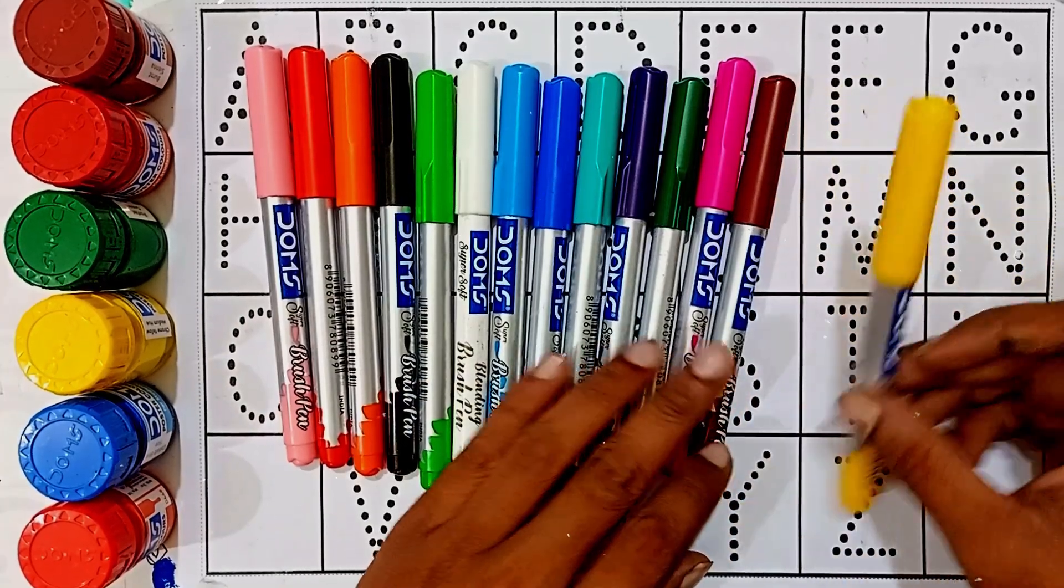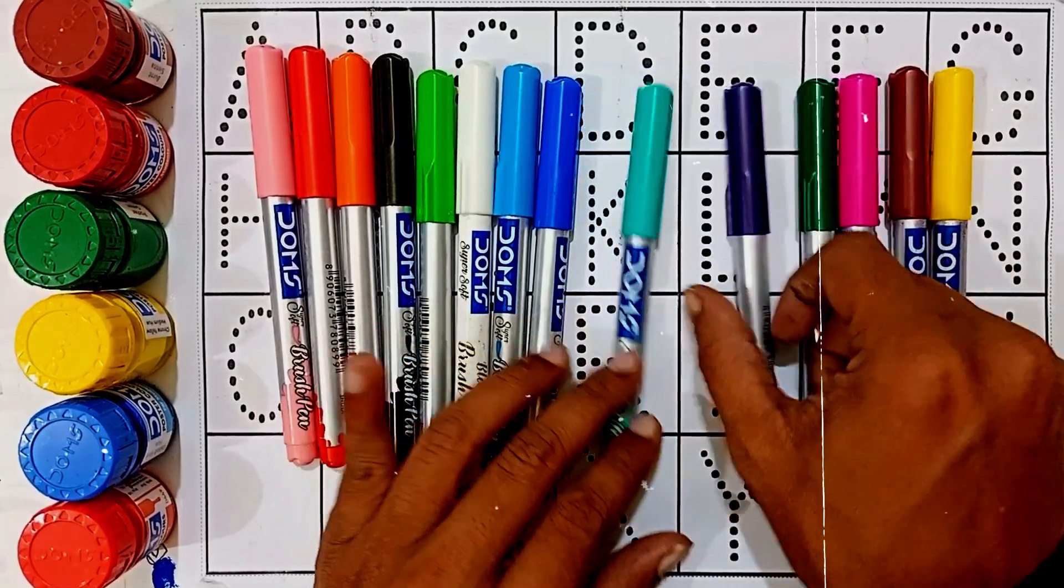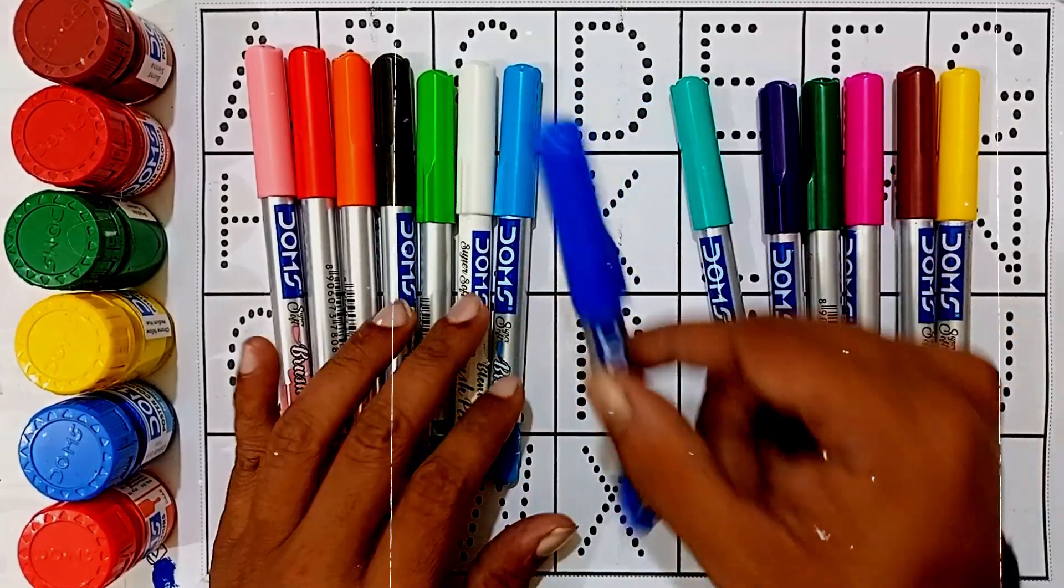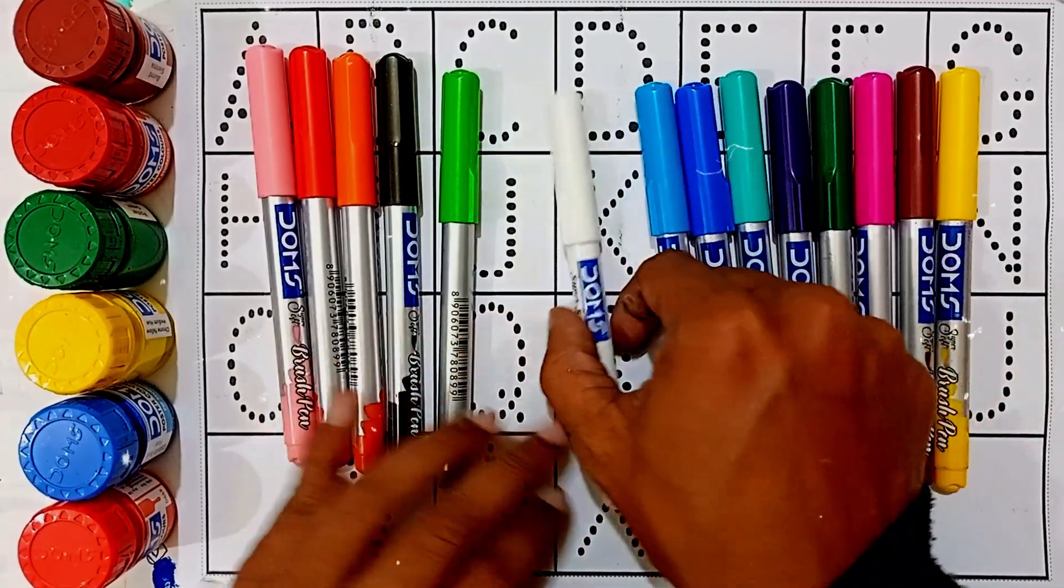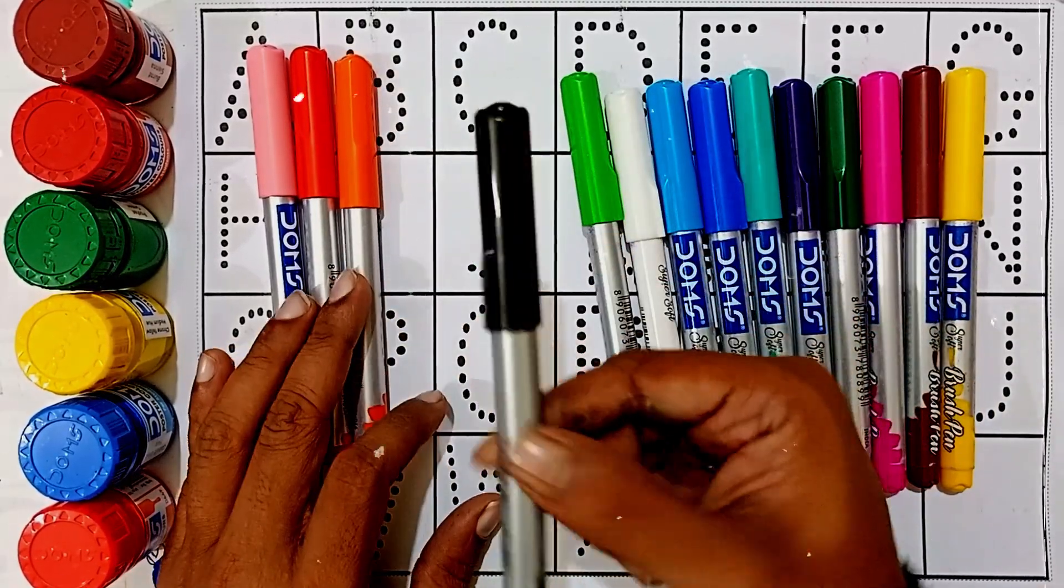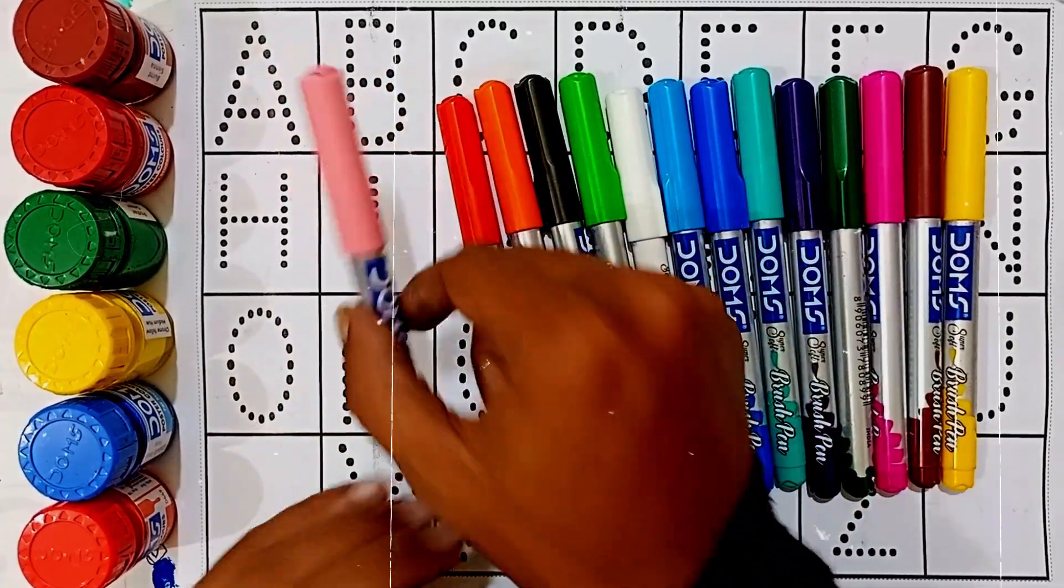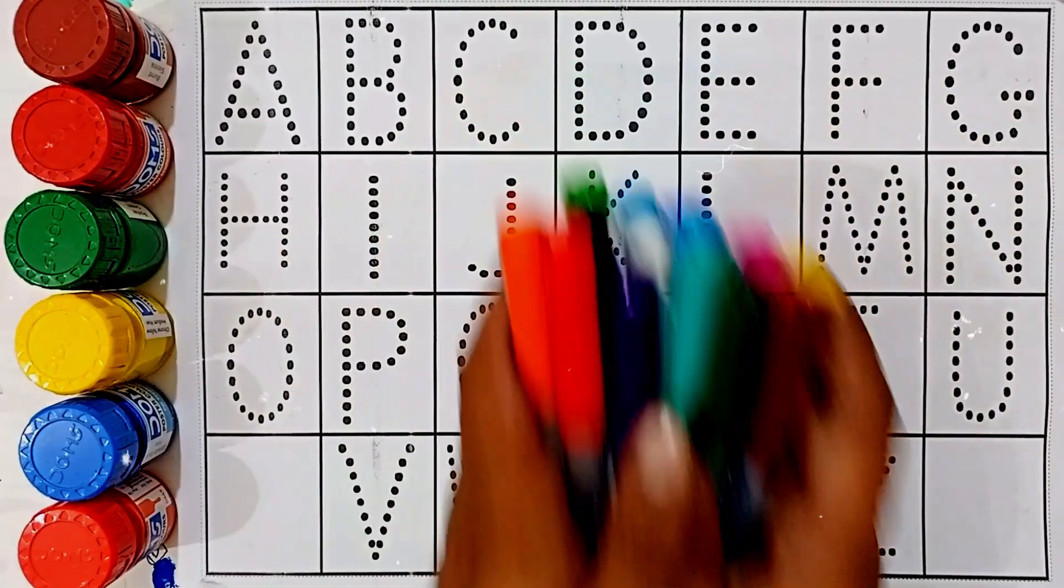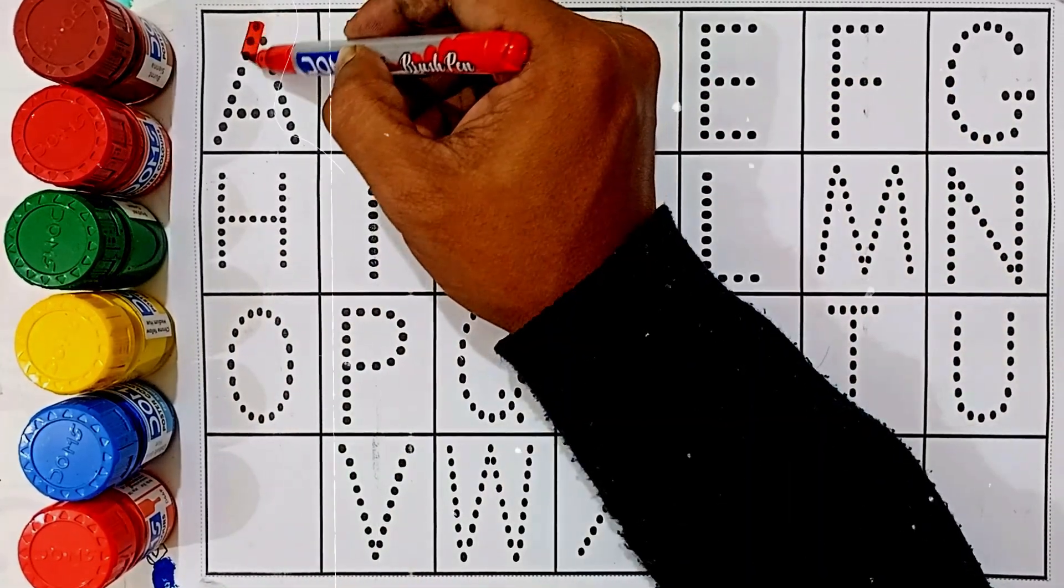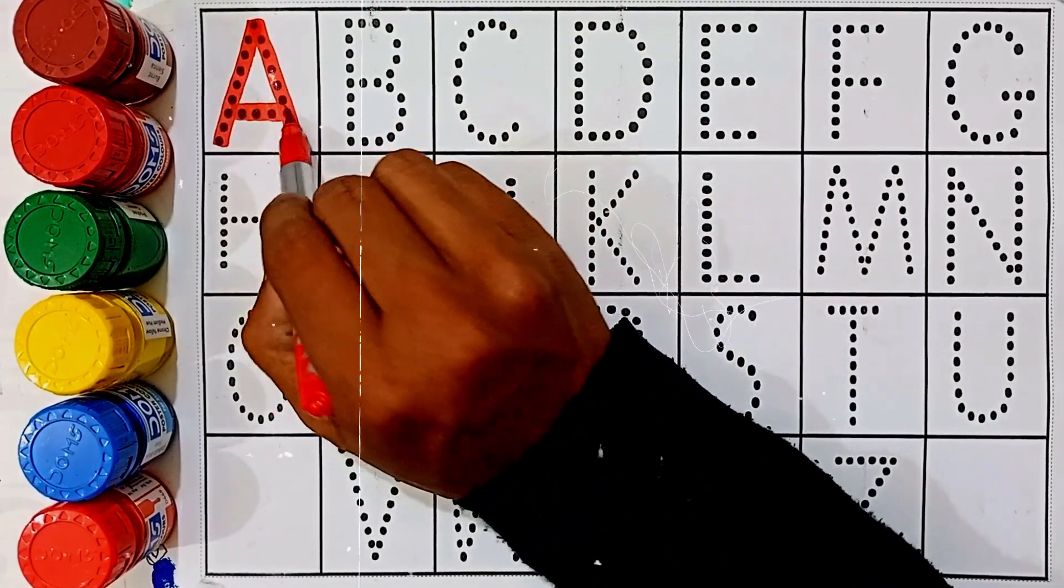Yellow color, brown color, pink color, green color, violet color, green color, blue color, sky blue color, white color, green color, light green color, black color, orange color, red color, light pink color.